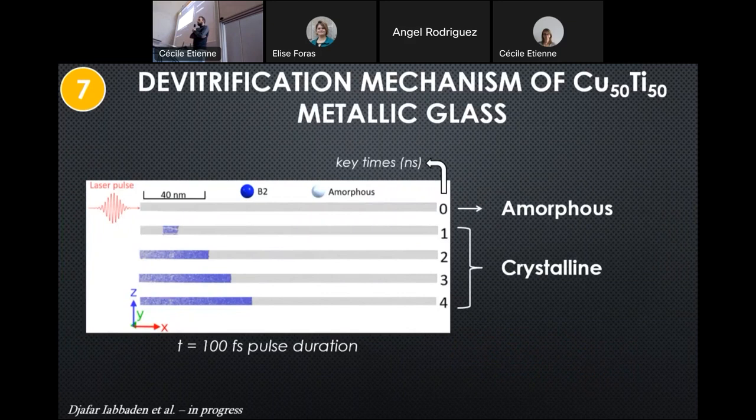This is a devitrification mechanism of copper titanium metallic glass obtained by my colleague Jeffrey Abadon, who is going to defend his PhD thesis in two weeks. We see the amorphous structure of this metallic glass where it's completely amorphous at the first key time. When we propagate the laser in positive X direction, we notice slow devitrification at different time steps in the laser propagation direction.